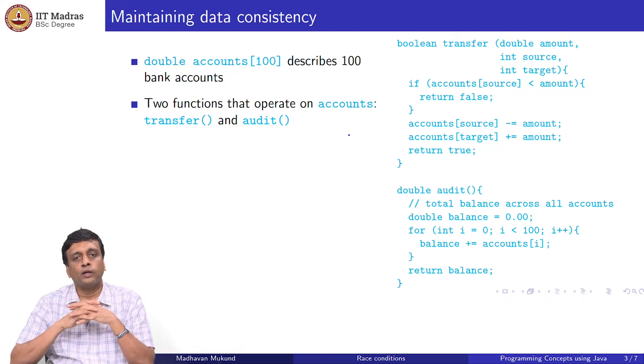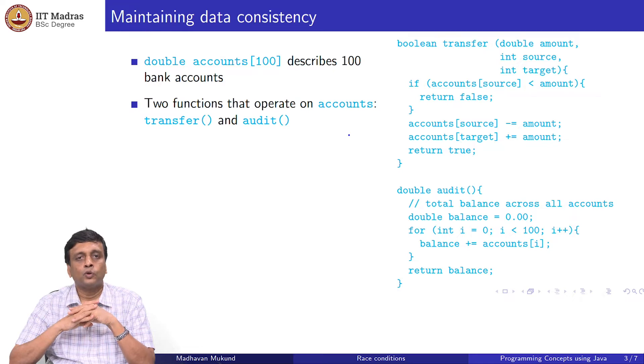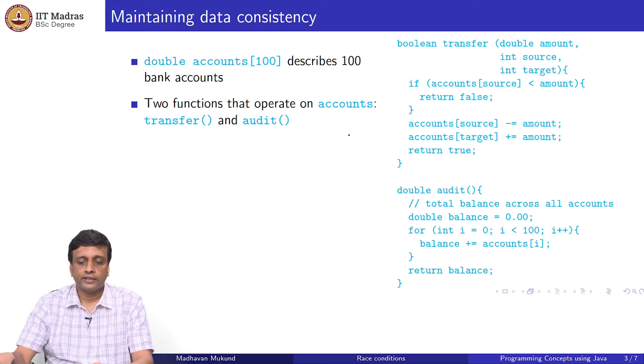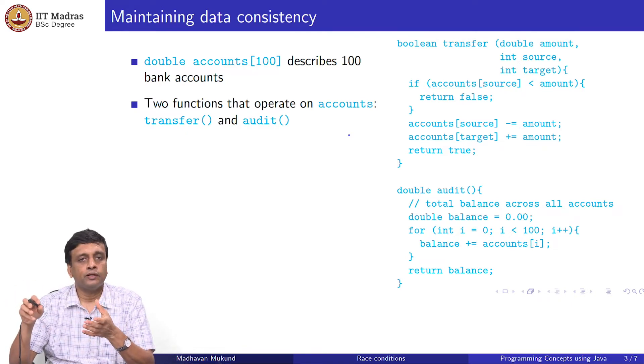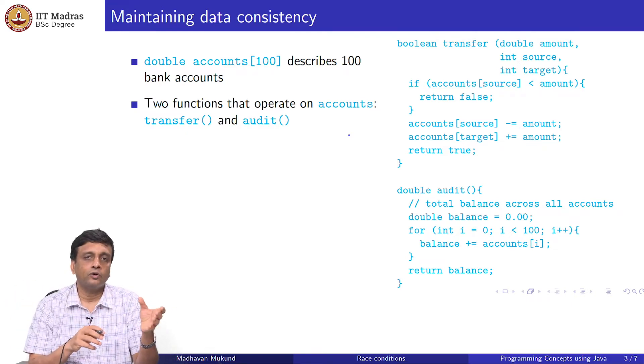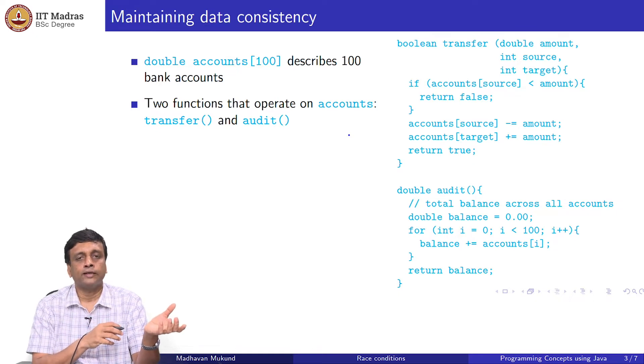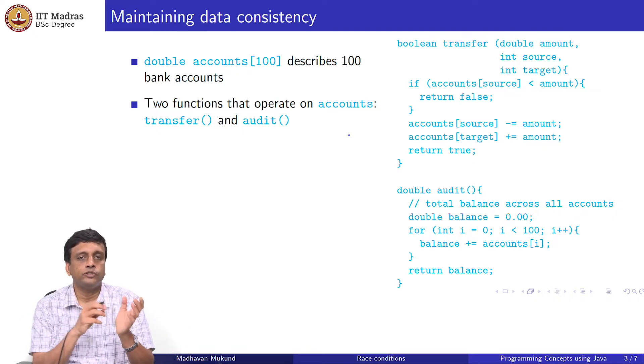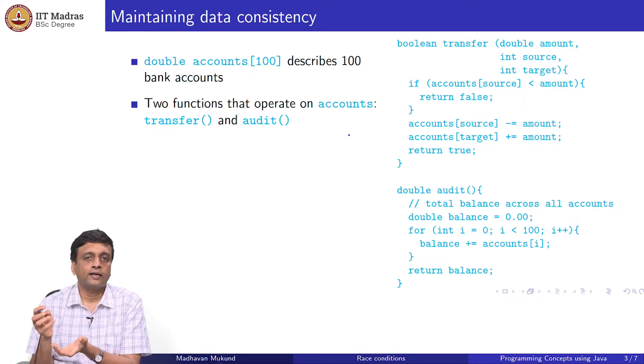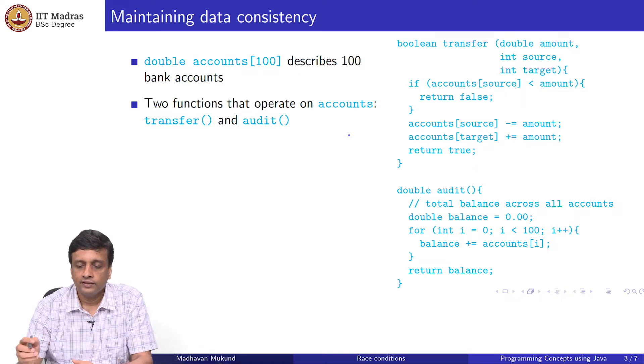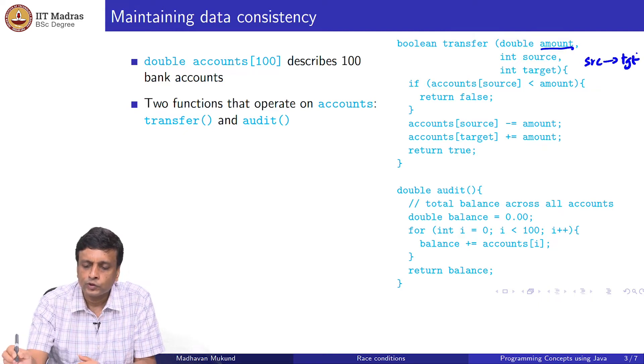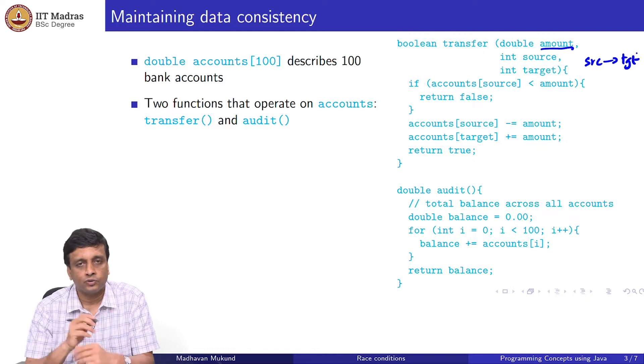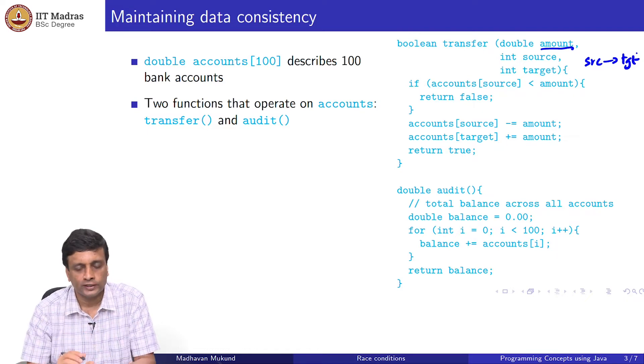We might want to allow two functions which operate on this array of accounts. One function is a transfer function. It will take an amount and a source account, some index between 0 and 99, and a target account, another account between 0 and 99, and transfer the amount from i to j. Source and target should be within your array, otherwise you will get some array bound exception.